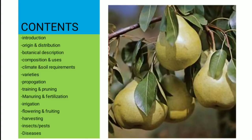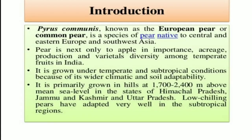These are the contents which include all the subtopics. Now let's begin with the introduction. Pyrus communis, known as the European Pear or common Pear, is a species of pear native to Central and Eastern Europe and Southwest Asia. Pear is next only to apple in importance of its acreage, production and varietal diversity among temperate fruits in India. It is grown under temperate and subtropical conditions because of its wider climatic and soil adaptability. It is primarily grown in hills at 1700 to 2400 meters above mean sea level in the states of Himachal Pradesh, Jammu and Kashmir, and Uttar Pradesh. Low-chilling Pyrus varieties have adapted very well in subtropical regions.